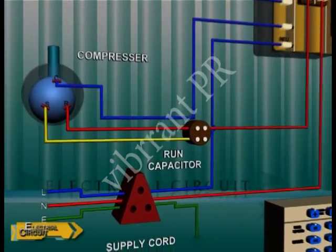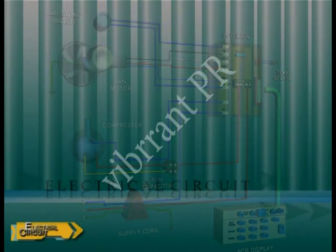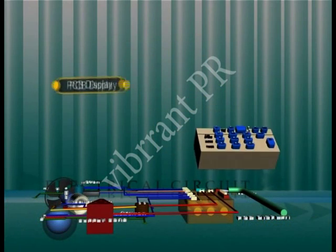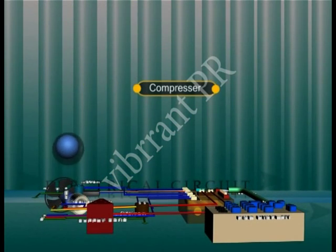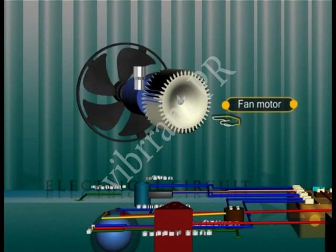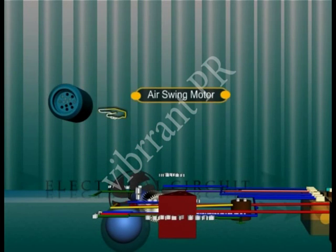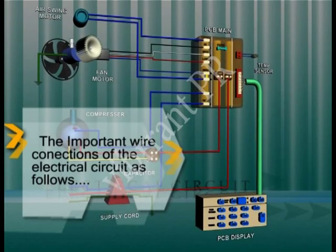This is the wiring diagram for the electrical circuit of the window AC. In this diagram, this is the main PCB, this is the PCB display, the compressor, the fan motor, and this is the air swing motor. The important wire connections in this diagram are as follows.